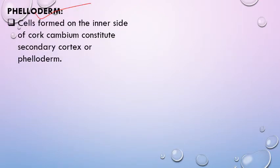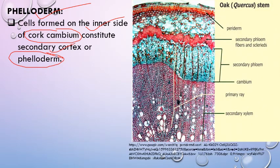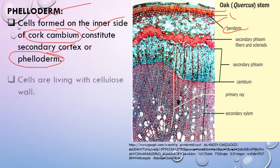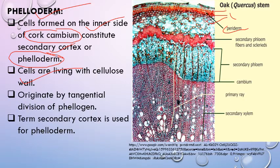Phelloderm is formed towards the inner side of cork cambium. It is also known as secondary cortex. In this picture, periderm consists of three components: secondary cortex, cork cambium, and cork cells. Cells of secondary cortex are living, having cellulose on their cell walls, and they originate by tangential division of phellogen.